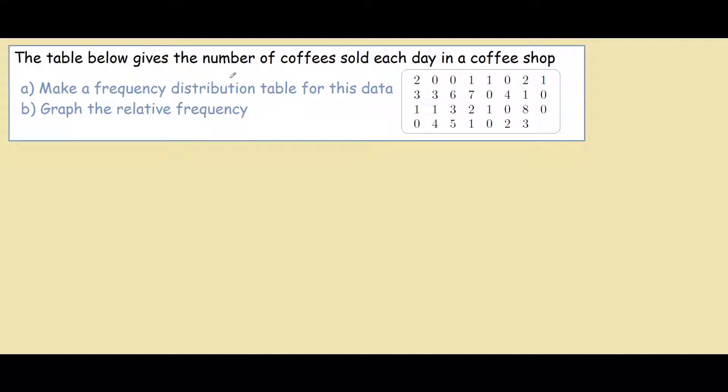In this question we are given a table with the number of coffees sold each day in a particular coffee shop. In this table, 2 would represent 2 coffees were sold on that day. Our question is to make a frequency distribution table for this data and also to graph the relative frequency.